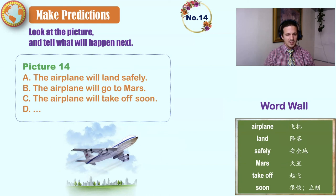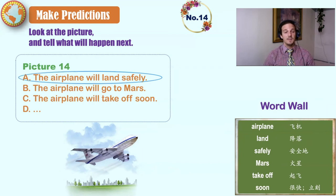In the picture, the plane is in the air. It doesn't look like a rocket ship. So, the next thing that will happen is the plane will land safely. It has already taken off. It is not built to go to Mars. It will land safely.